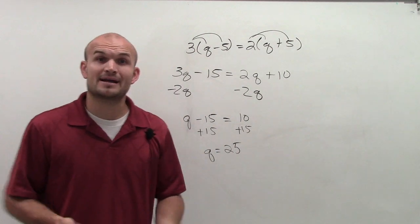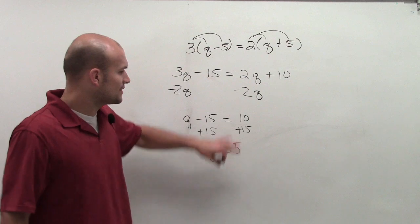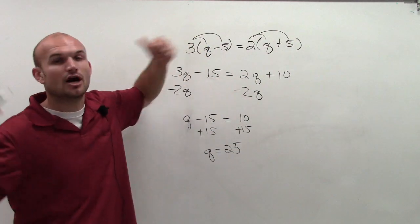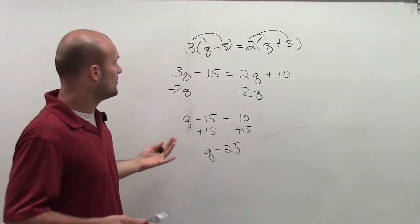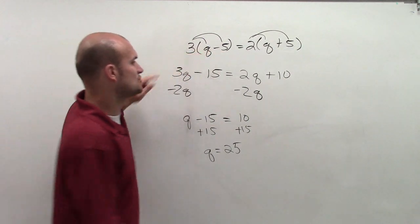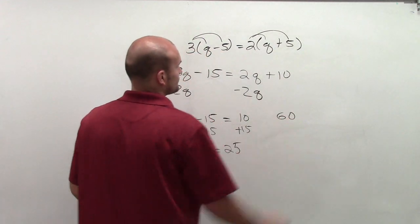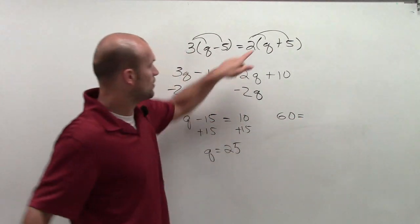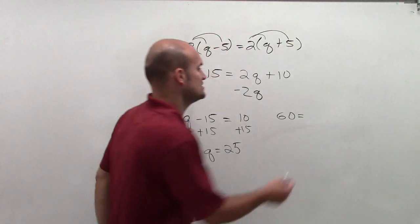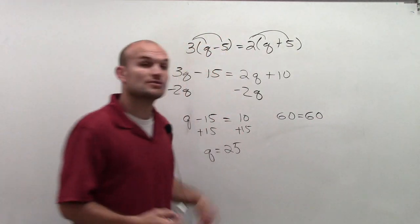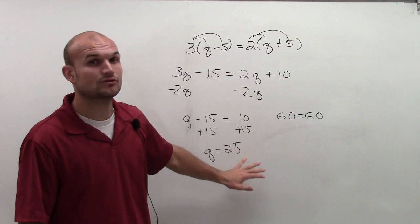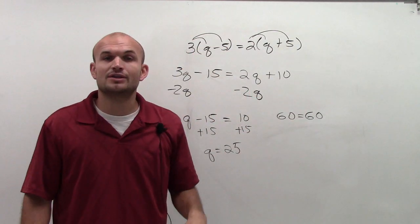If you want to check the answer, you can take 25 and plug it back in for q. I'll do it out loud. So 25 minus 5 is 20, and 3 times 20 is 60. On the right side, 25 plus 5 is 30, and 30 times 2 equals 60. So it works out — when q equals 25, it makes the equation true.